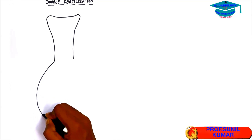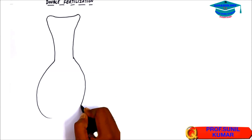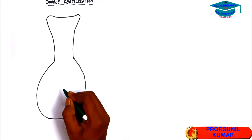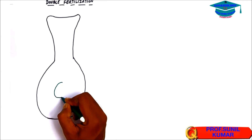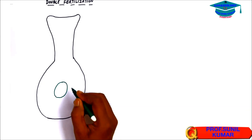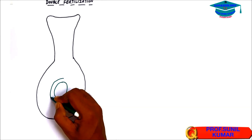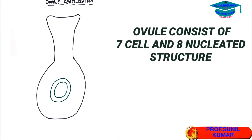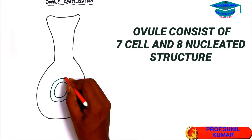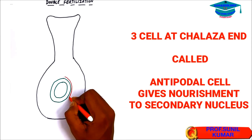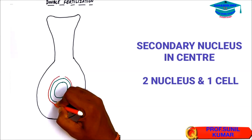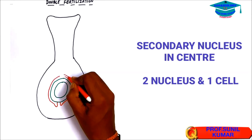Here we are going to draw the diagram of the gynoecium, which consists of 3 parts: the stigma, style, and ovary. Inside the ovary we draw the ovule. The ovule consists of a 7-celled and 8-nucleated structure where 3 cells are at the chalaza end, 3 cells at the micropyle end, and in the middle there is a 2-nucleus, 1-cell structure.